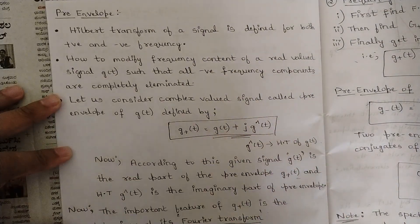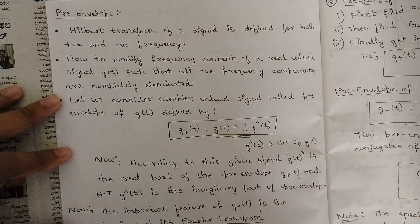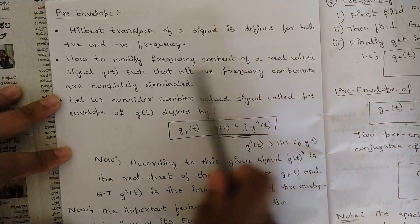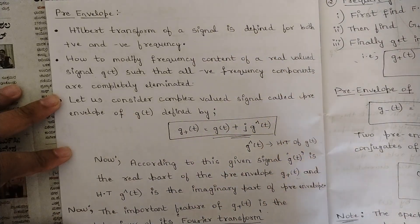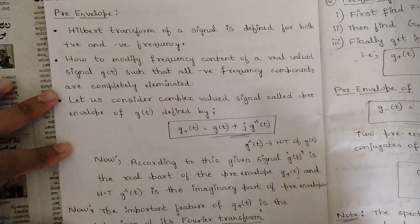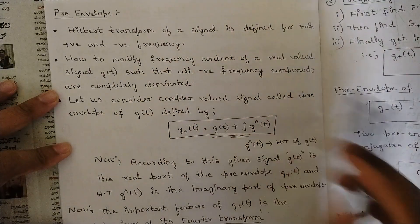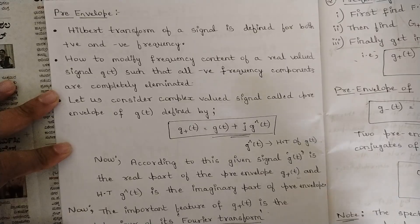The question is: how to modify the frequency content of a real-valued signal g(t) such that all negative frequency components are completely eliminated? Whenever phase reversal takes place and we have one fixed amplitude, the frequency obtained from those signals won't be fixed — that frequency would be varying. Our goal is to eliminate all the negative frequency components.